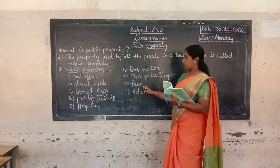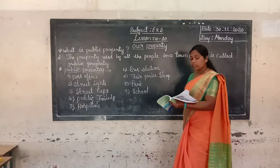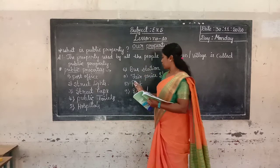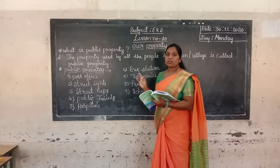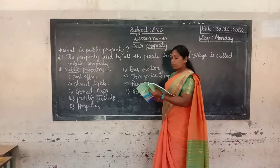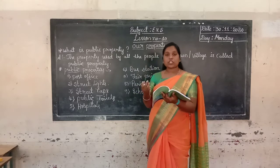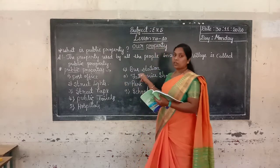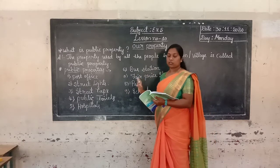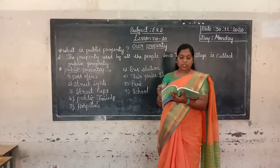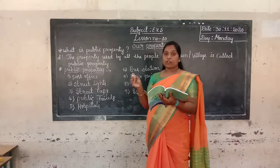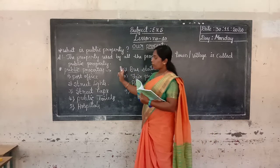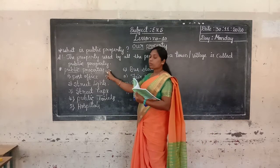Next one is park. Park is also very beautiful. I think students, you like most to play in the park. We pass through the park to reach our schools. There are varieties of plants and flowers available in the park. Trees and flowers are found in the park. Park is also one of the public properties.